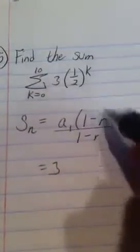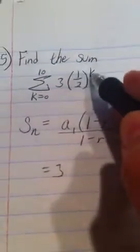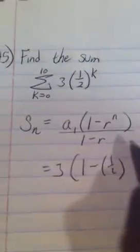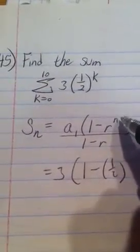My r is what's being raised to that power. So this is 1 minus 1 half. And then I need the n, the number of terms.